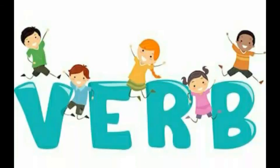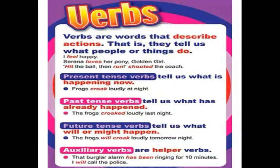A verb describes what a person or a thing does or what happens. Verbs describe: 1) an action, 2) an event, 3) a situation, 4) a change. Verbs come in three tenses: present, past, and future. The basic form of a verb is known as the infinitive, and it is often preceded by the word 'to'. Verbs show an action or state.